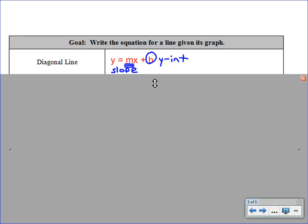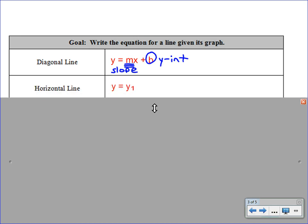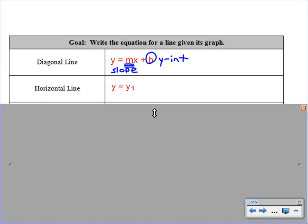The second type of line is a horizontal line. Horizontal lines are just y equals a number. And for our purposes, we're going to put y1, which is just the y-coordinate of any point that's on that line. It could also be the y-intercept, as long as we're using that vocabulary. So any y-coordinate, the y-intercept, whatever the second number in that ordered pair is, that's going to be what you put in for y1.